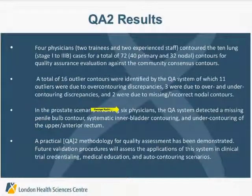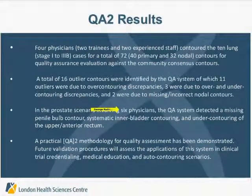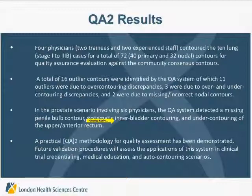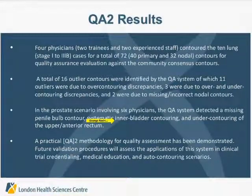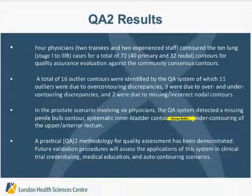For the prostate scenario, six physicians not involved with the community contoured the one case, and we found three outlier contours, including a missing penile bulb contour. Interestingly, one individual contoured the inner bladder instead of the outer bladder — he's primarily a brachytherapy clinician, and that was the practice at his institution. The QA2 system detected that he systematically contoured the inner bladder. There was also one individual who under-contoured the rectum in the upper area, which the system picked up as well.